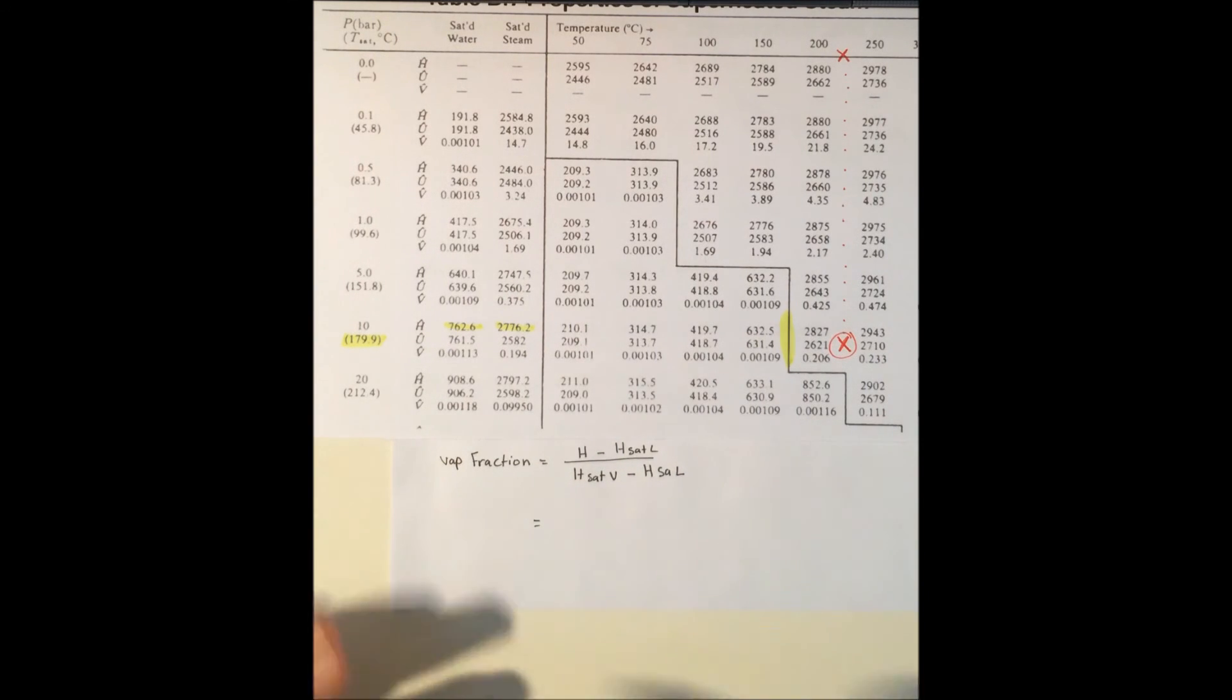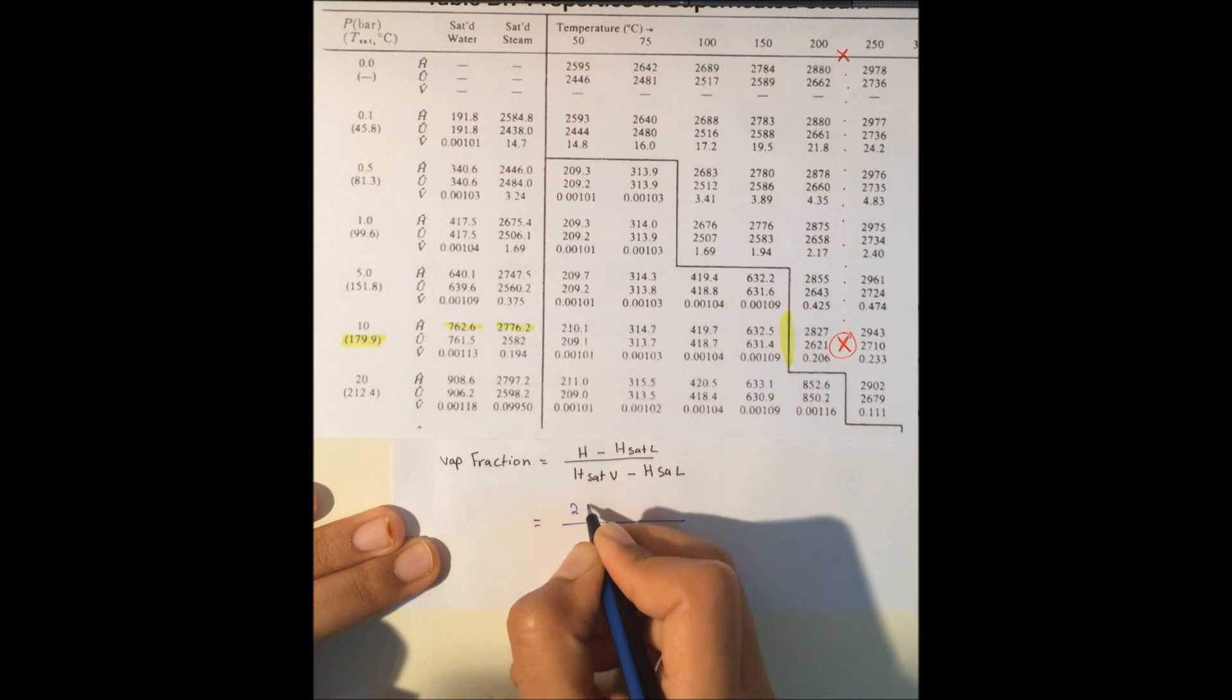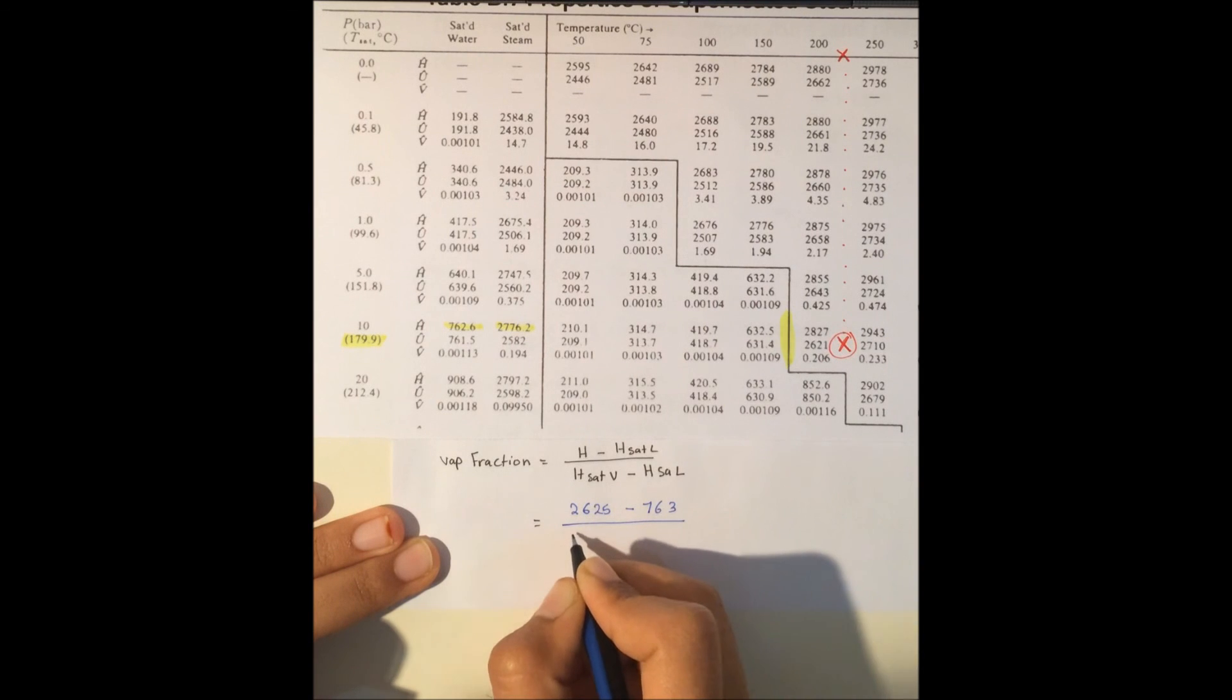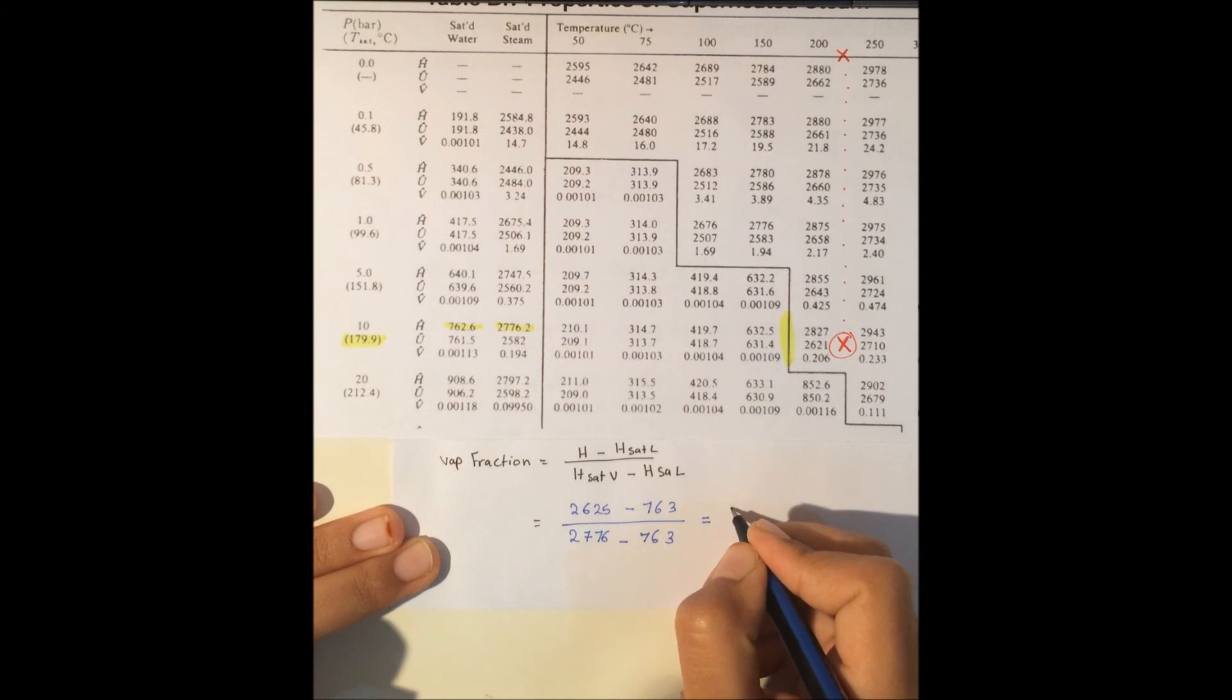Now we will do the calculation: (2625 minus 763) divided by (2776 minus 763), and this will be equal to 93 percent.